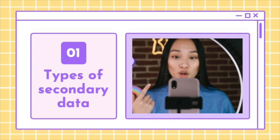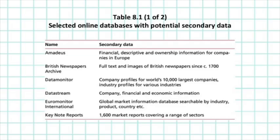Let's look at the types of secondary data. Secondary data include both quantitative, numeric and qualitative, non-numeric data, and are used principally in both descriptive and explanatory research. The secondary data you analyse further may be raw data, where there has been little or any processing, or compiled data that have received some form of selection or summarising.